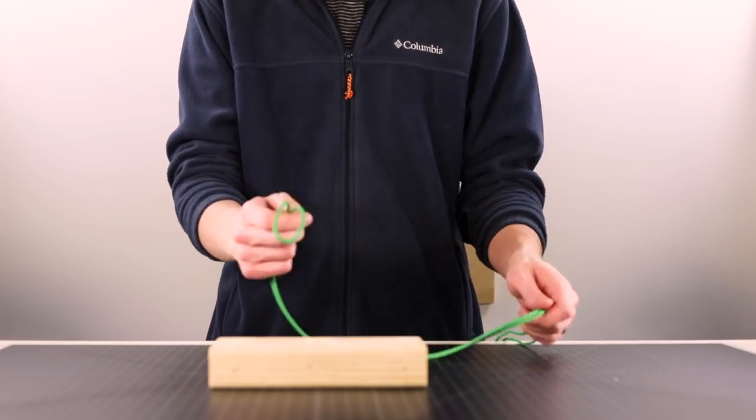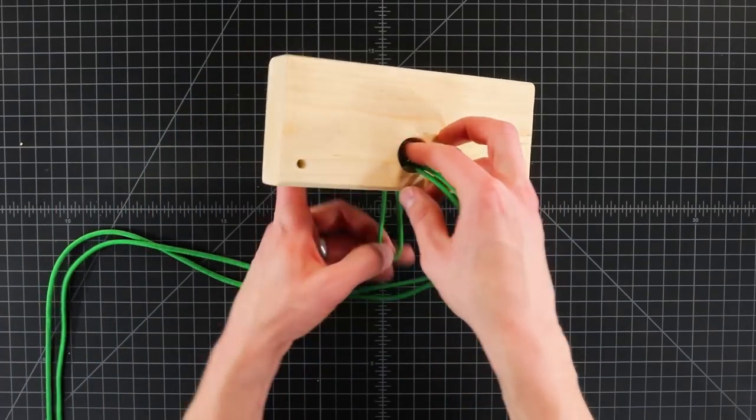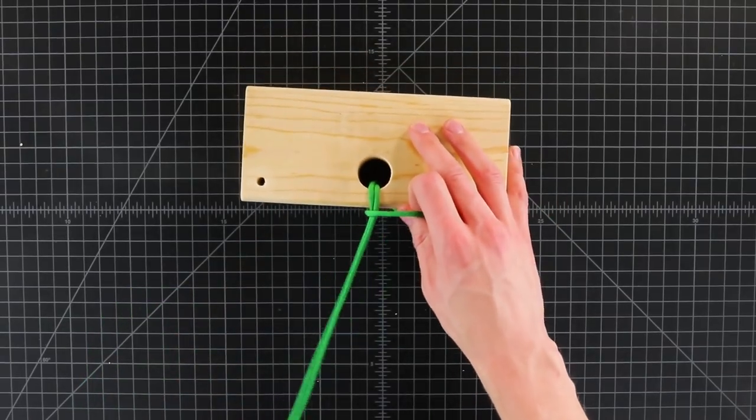Then take your paracord, find the middle, and put it down through the big hole. And pull the ends through that loop, making a cow's hitch.